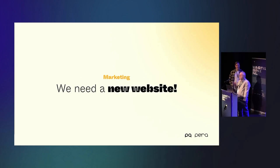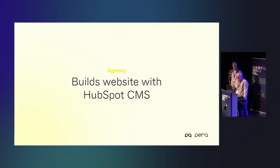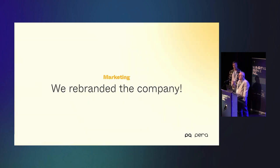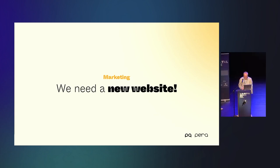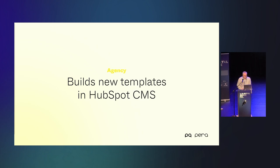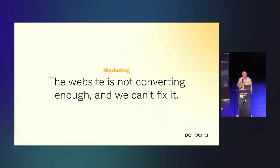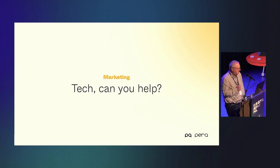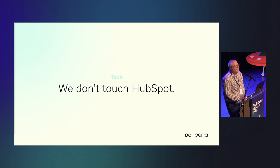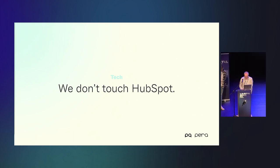At that point sales had adopted HubSpot, so the idea was: we can put the website in HubSpot CMS. They hired a marketing agency to build the HubSpot templates, then rebranded the company and hired another agency to build another set of templates. Finally they decided the third generation of HubSpot templates really wasn't working for them and needed to be done again — and they came back to us for help.